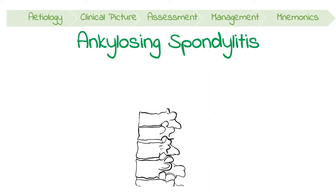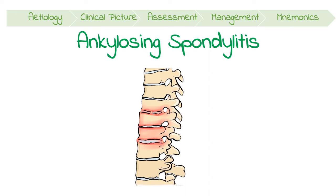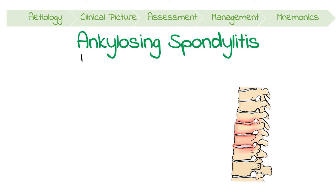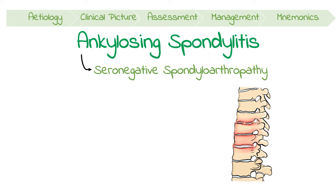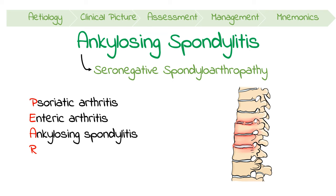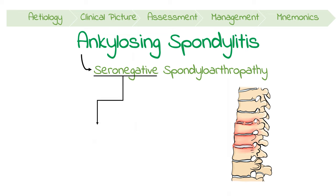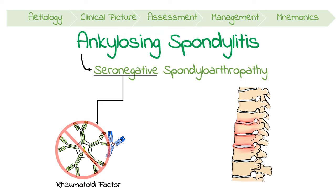Ankylosing spondylitis is a chronic inflammatory disease of the axial skeleton that leads to the fusion and rigidity of the spine. It's described as a seronegative spondyloarthropathy, which is a group of four conditions with overlapping clinical manifestations. These are remembered as the PAIR diseases: psoriatic arthritis, enteric arthritis, ankylosing spondylitis, and reactive arthritis. They are seronegative because the serum shows a negative rheumatoid factor, and are spondyloarthropathies because they all cause joint disease in the vertebral column.